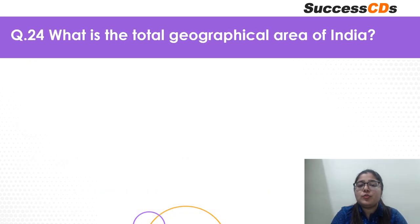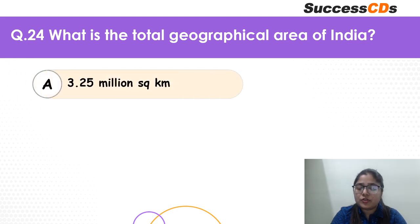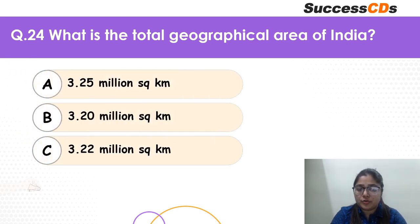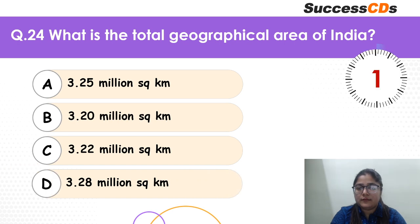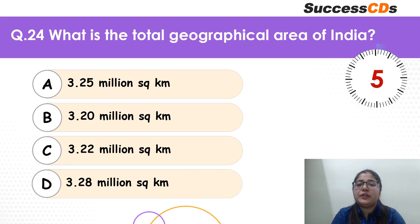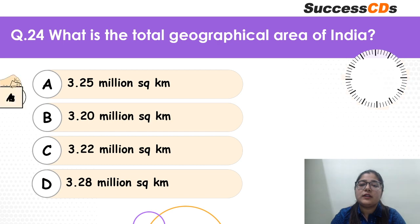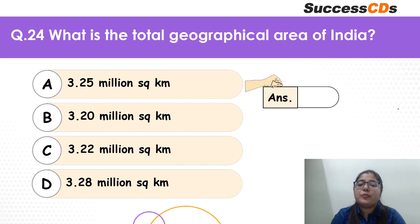What is the total geographical area of India? Very factual question. Is it 3.25, 3.20, 3.22 or 3.28 million sq km? The correct option is going to be D — 3.28 million sq km. If you don't know this, memorize it now.